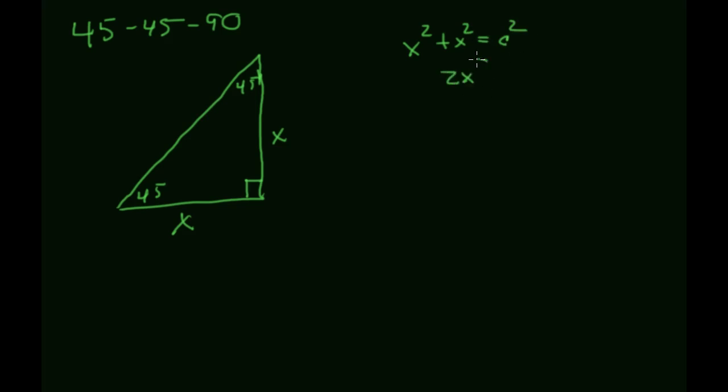If I take the square root of both sides, I get that c is equal to x times the square root of 2. So this is always going to be x times the square root of 2.